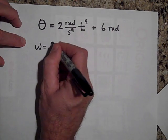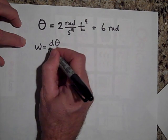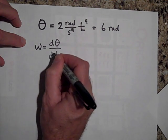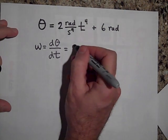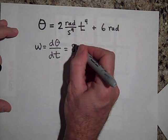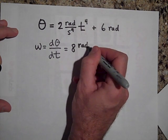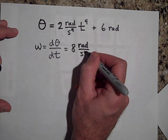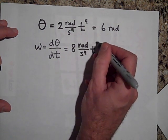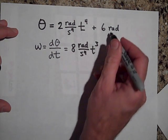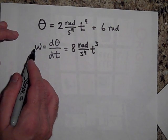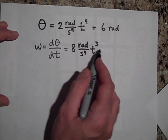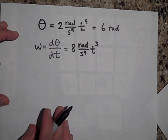Omega is d-theta/dt. So you need to take the derivative — that's going to give you eight radians per second to the fourth times t cubed, and then the constant goes to zero. So the omega at one second would just be eight radians per second.